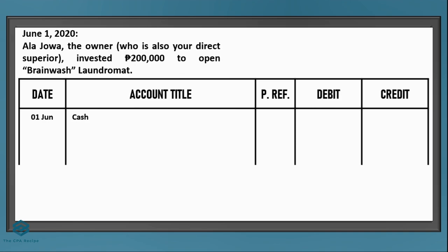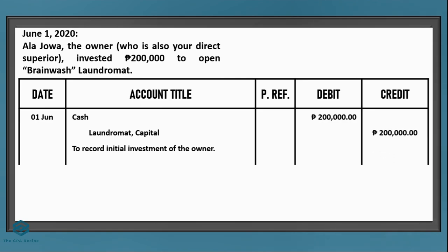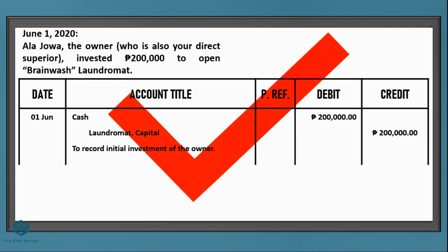What's the partner credit? This is an investment by the owner, so the owner's equity account should increase. Check the chart of accounts — the capital account is 'Laundromat Capital.' Also, don't forget to put the explanation; it doesn't have to be very specific, just clear enough to describe the transaction. Since the amount is given, let's put 200,000 pesos under the debit and credit columns. If your answer matches, give yourself a check with a red pen.